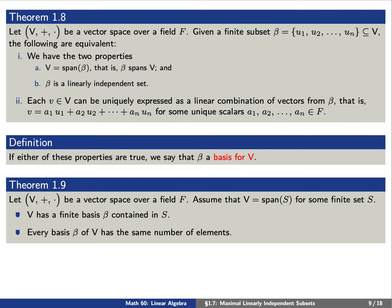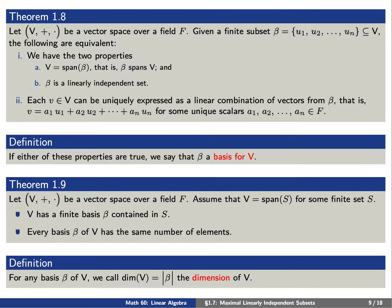Let's assume for the moment that our V is spanned by some finite set S. Then V has a basis beta contained in S, and every basis beta of V has the same number of elements. Using this, given a basis beta of V, we call the dimension of V the number of elements in this basis.